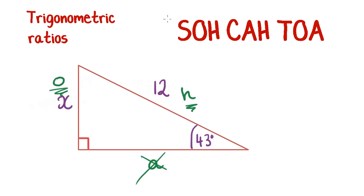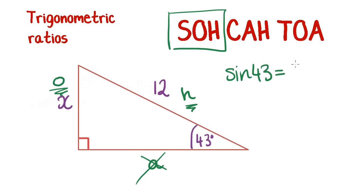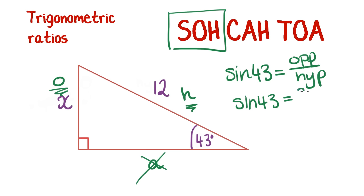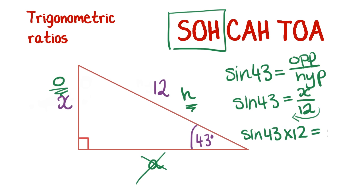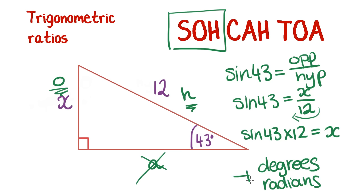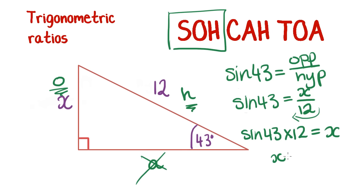We're using sine. So: sine of 43 equals the opposite over the hypotenuse, which is X over 12. To get X by itself, multiply both sides by 12: sine 43 times 12 equals X. Make sure your calculator is in degrees mode — if it's in radians you'll get a different answer. Ask your teacher if you're unsure. This gives X equals 8.18.